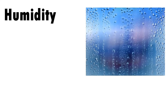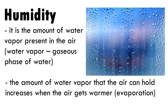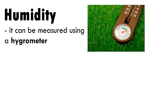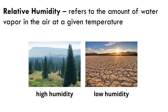Humidity is the amount of water vapor present in the air. Water vapor is the gaseous phase of water. The amount of water vapor that the air can hold increases when the air gets warmer through evaporation. It can be measured using a hygrometer. Humidity varies depending on the temperature of the area, and is known as relative humidity.